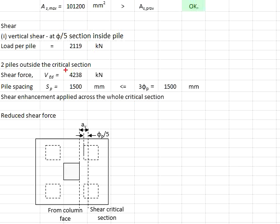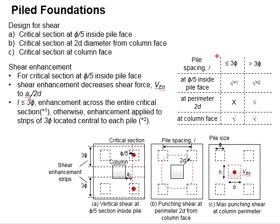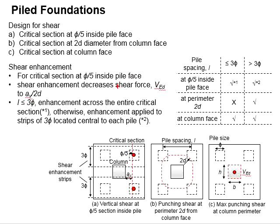The shear force generated by two piles is equal to 4238 kilonewtons. The spacing of the piles is equal to 1.5 meters, which is less than or equal to three times the pile size. That means there will be shear enhancement and the shear force will reduce by av over 2d.